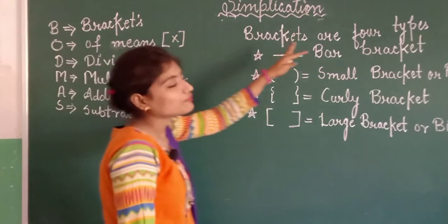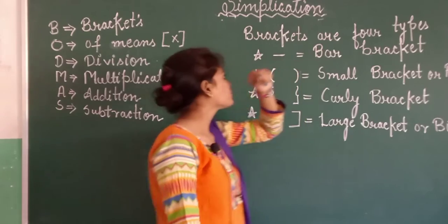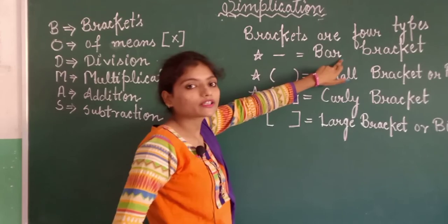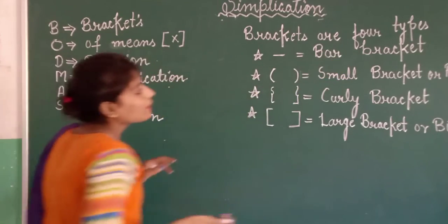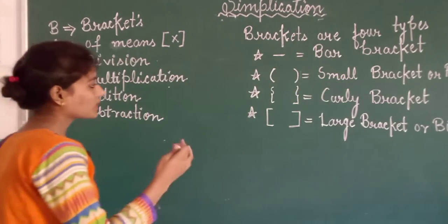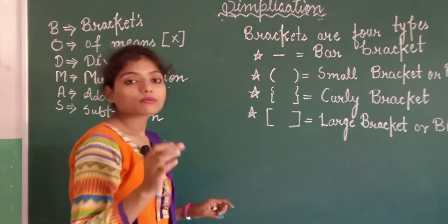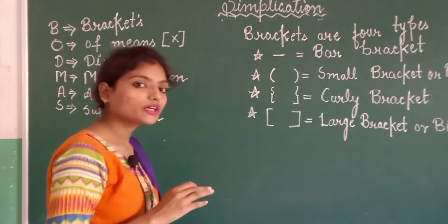Brackets are generally four types. First bracket is bar bracket. So we will solve bar bracket. Means jo hamara, jaise aapko sums diya gaya hai, us mein aapko first bracket jo hoga, woh bar bracket hoga. So sabse pehle aap bar bracket ko solve karenge.